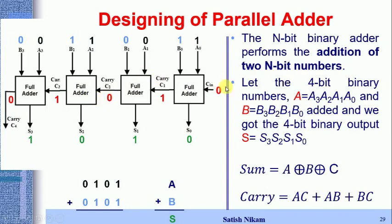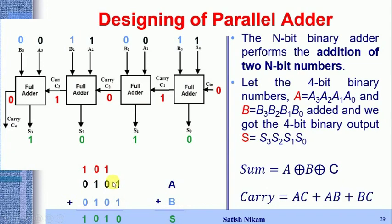We got the output for the four-bit parallel adder. Verifying arithmetically: 1+1 = 0 with carry 1; then 0+0+1 gives sum 1, carry 0; then 1+1+0 gives sum 0, carry 1; finally 0+0+1 gives sum 1, carry 0. This gives output 1010, which is 10. Since A = 0101 = 5 and B = 0101 = 5, and 5+5 = 10, the parallel adder gives the correct result of 1010.